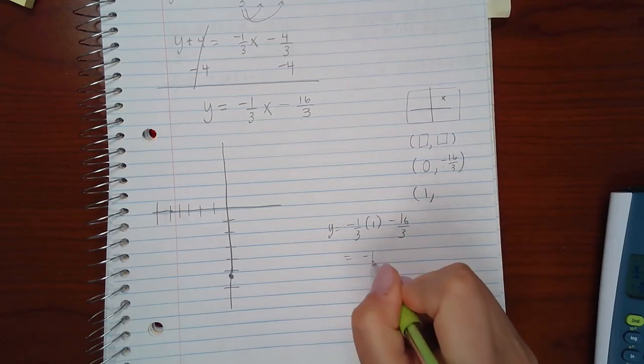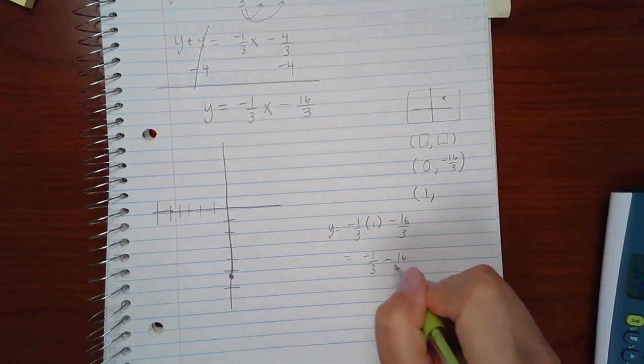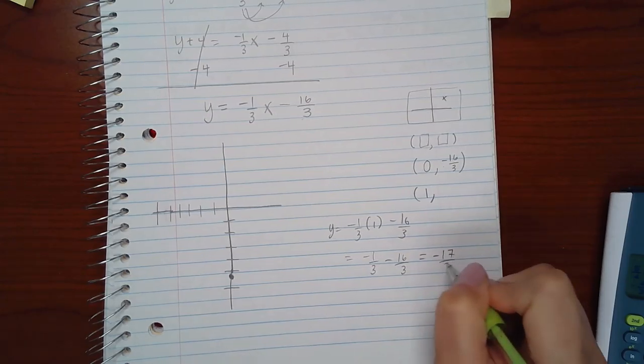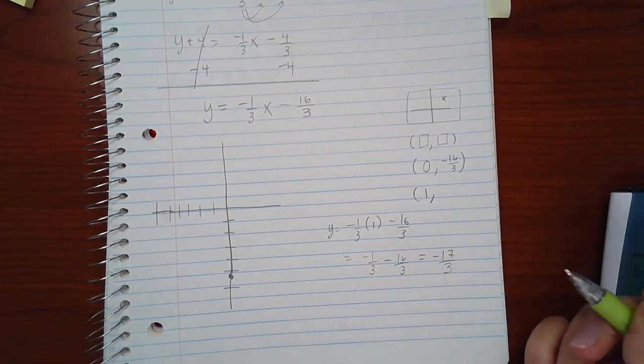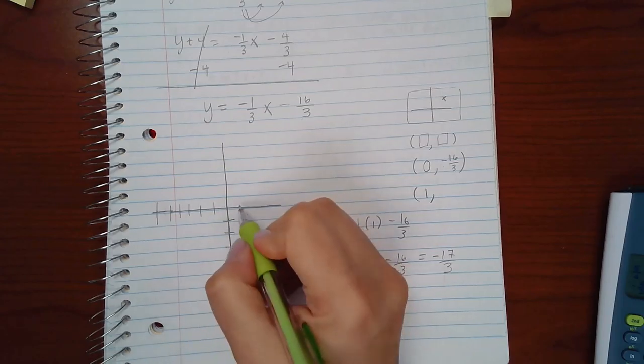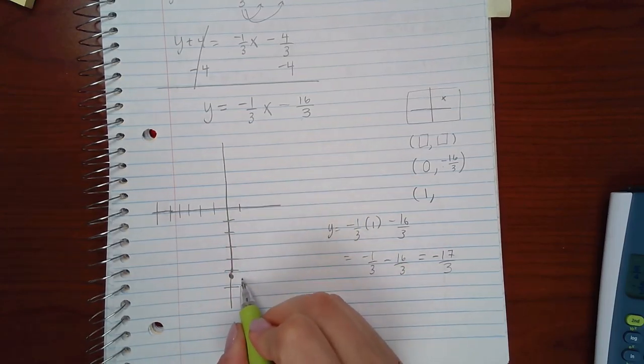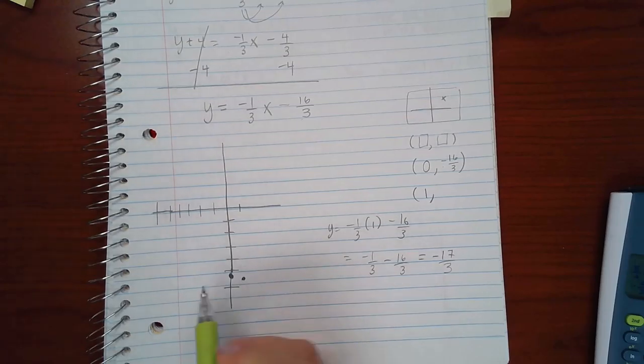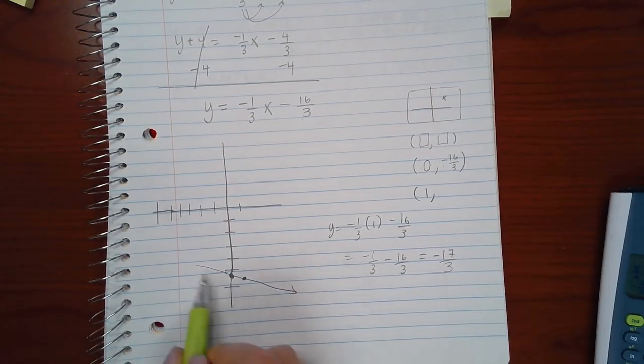I would get negative 1 third minus 16 thirds, which is negative 17 thirds. You could also use your calculator to get that. What that means is that when I plug in 1, I should get negative 17 thirds, which means the line should be going in this direction.